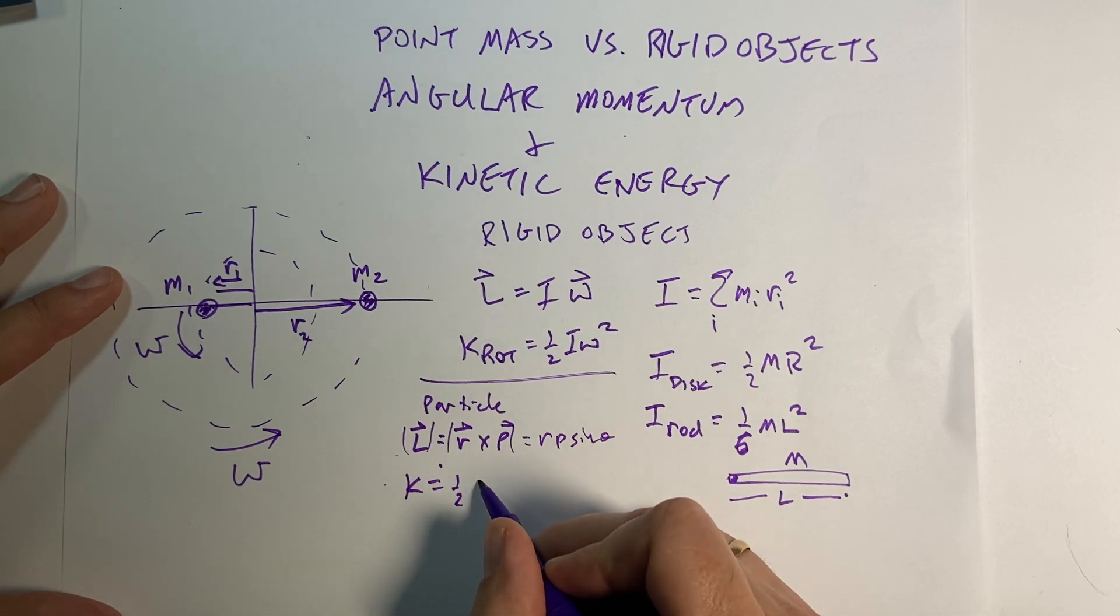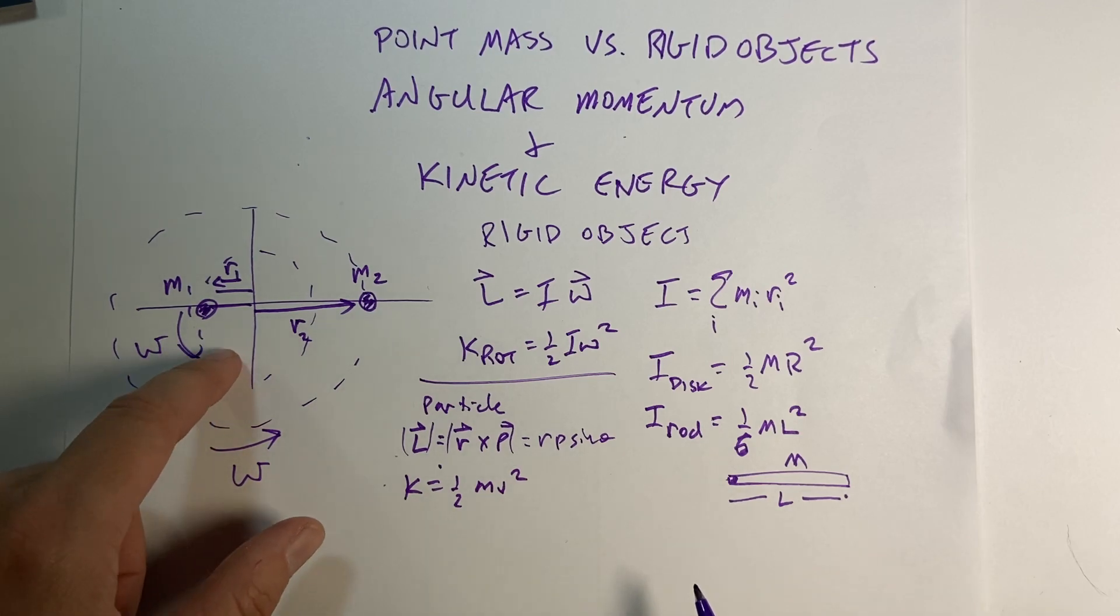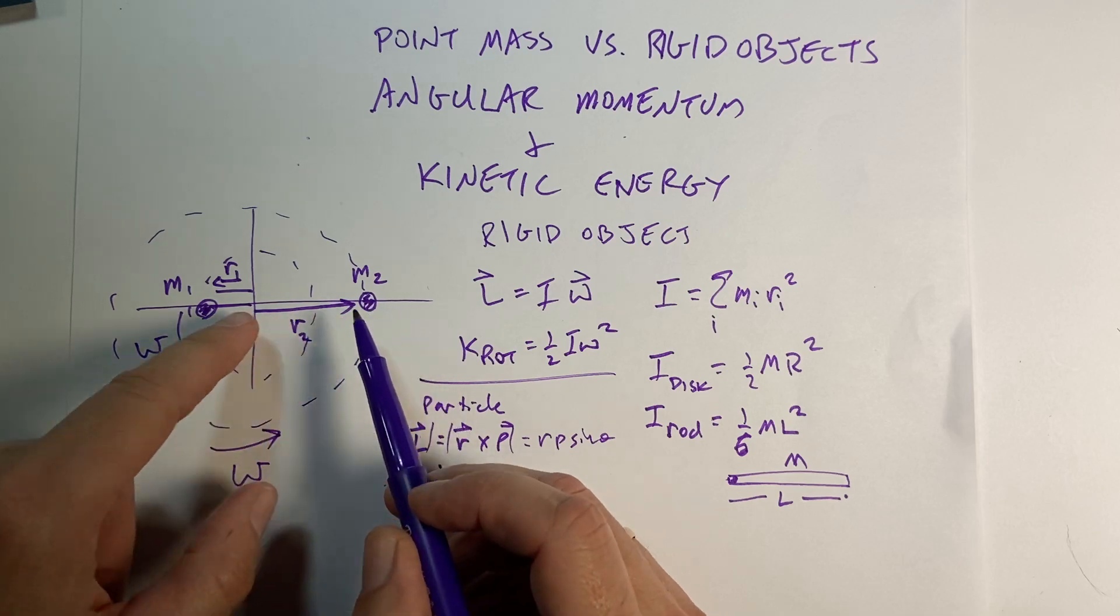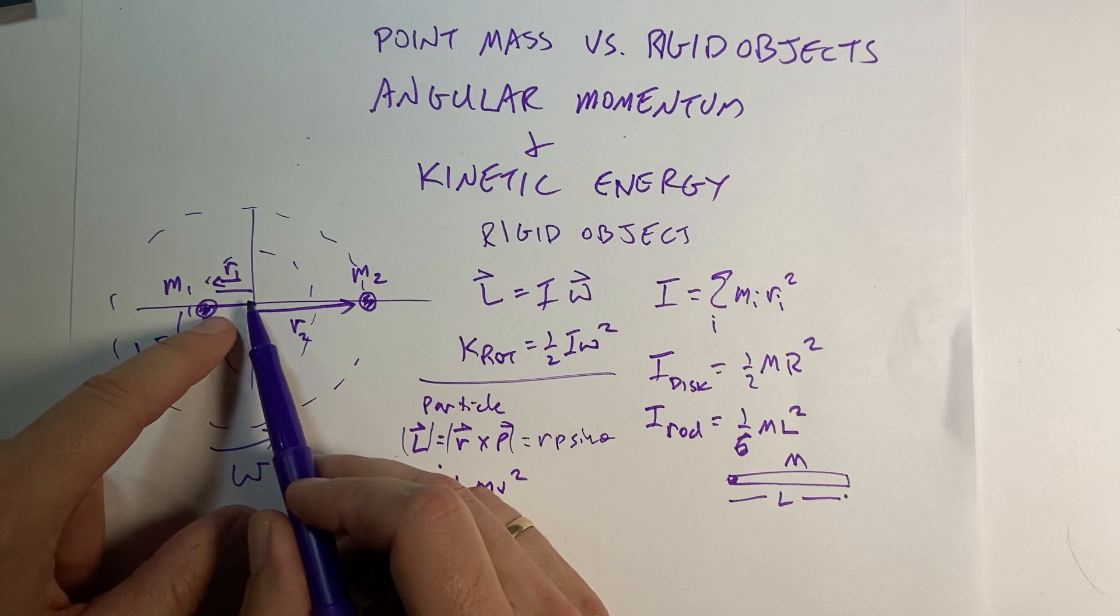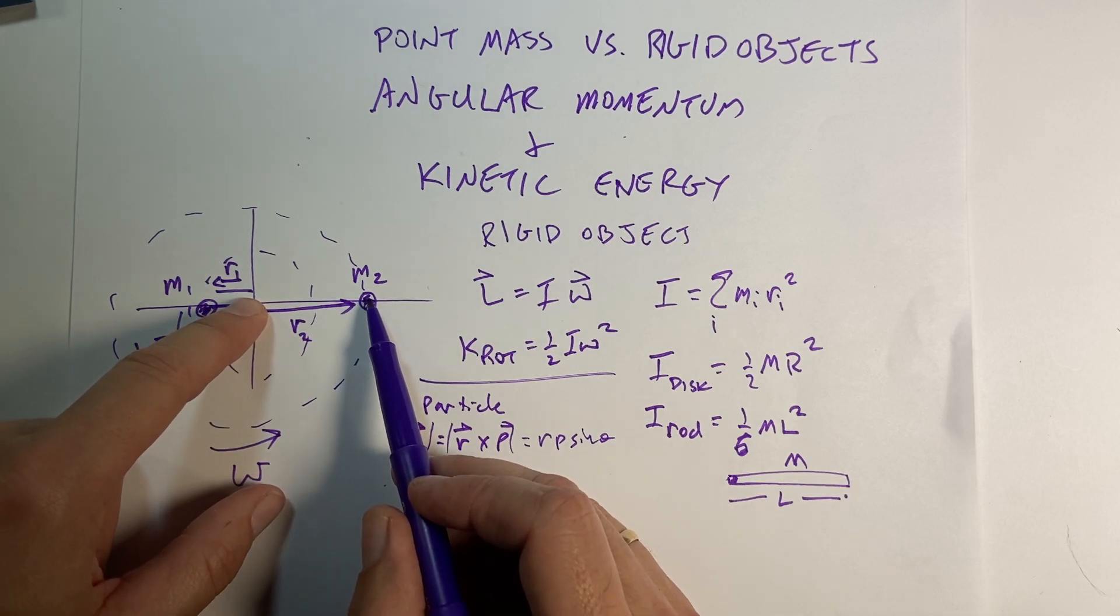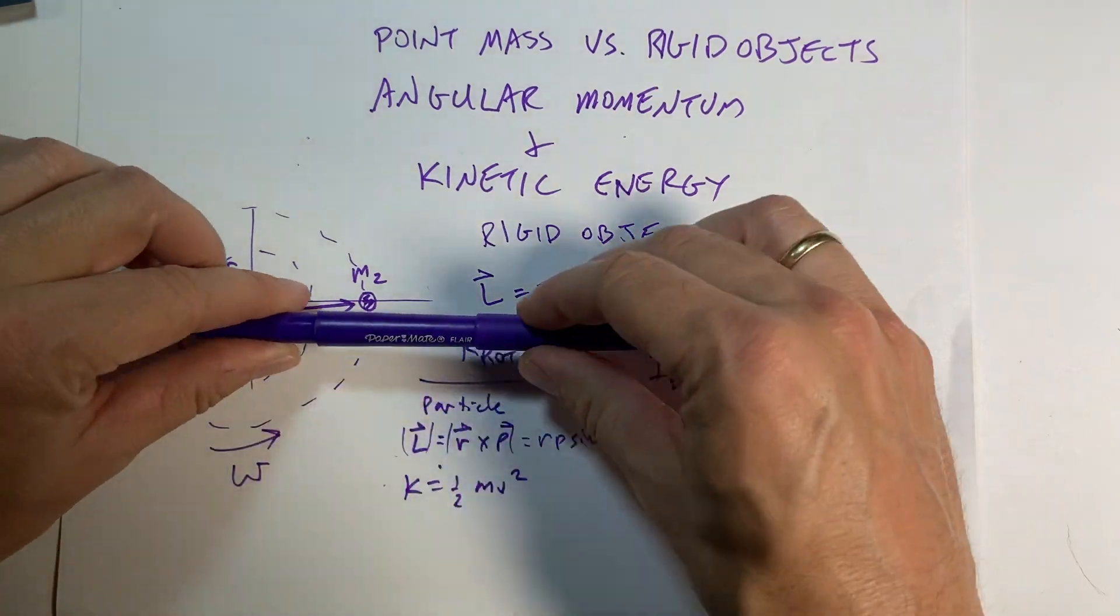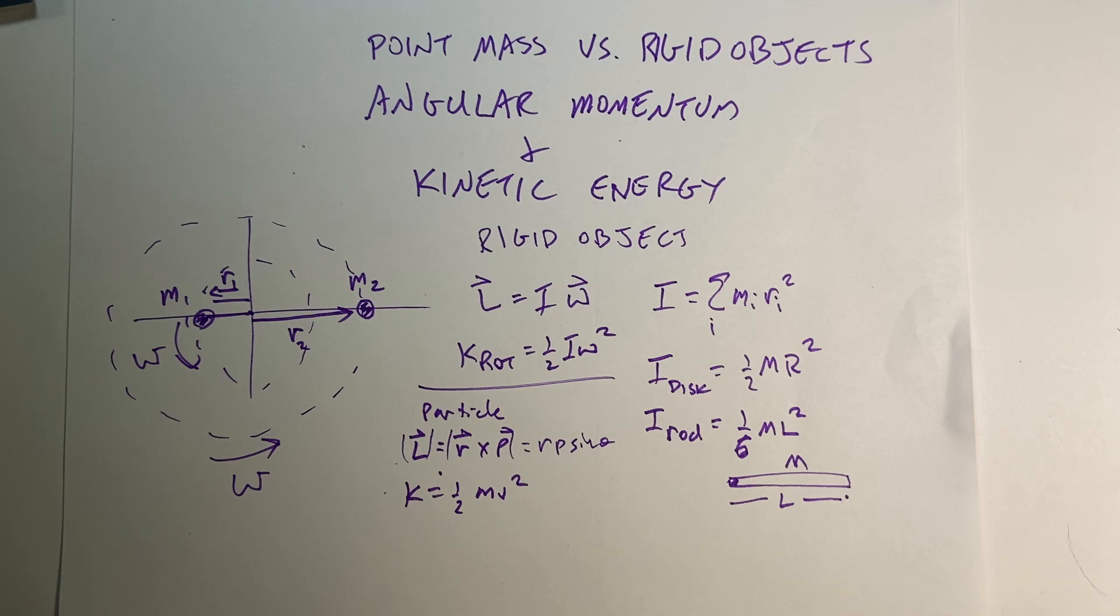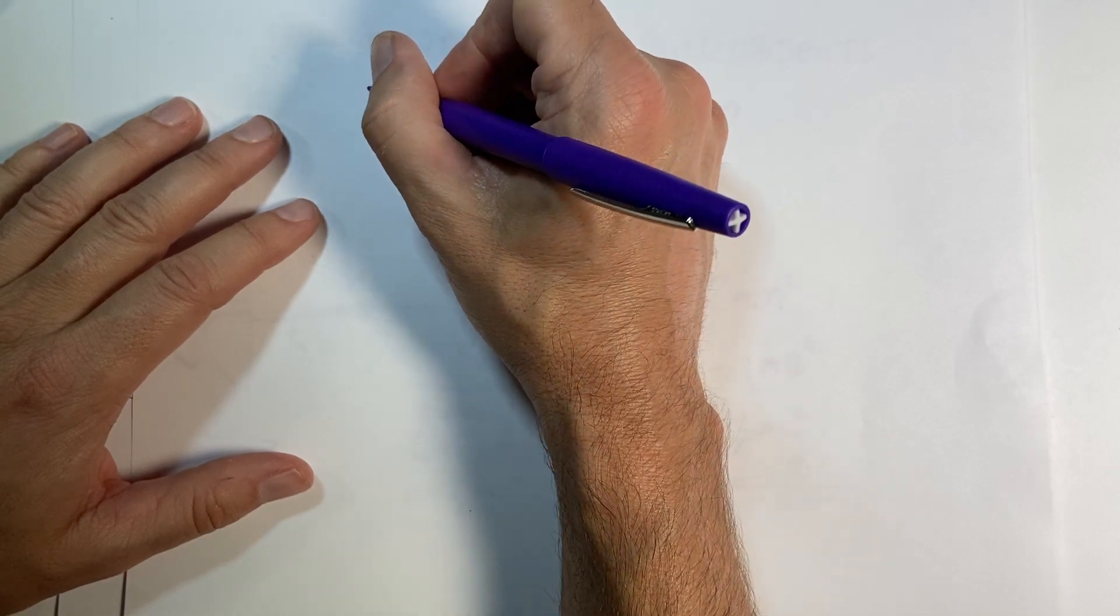So I'm going to find the kinetic energy and the angular momentum for this situation. So I have two masses. m1 has mass m1 and it's distance r1 from the origin, the point of rotation, and m2 is a distance r2 from the point of rotation. And so this thing is rotating around with the same angular velocity.